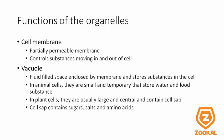The cell membrane is a partially permeable membrane, and it controls substances moving in and out of the cell. You should be aware that it is only partially permeable. The vacuole is a fluid-filled space enclosed by membrane, and it stores substances in the cell. In animal cells, they are used to store water and food substances, and hence are only temporary. In plant cells, they are large and contain cell sap, found in the central portion of the cell. The cell sap contains sugars, salts, and amino acids.